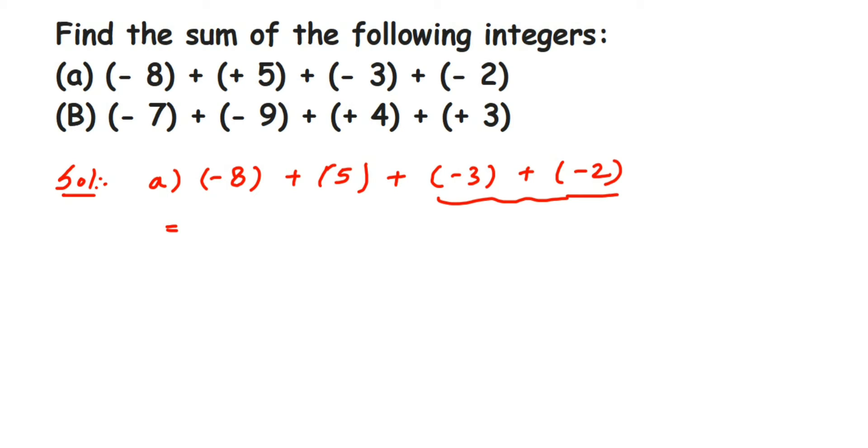So I'm going to solve (-3) + (-2) first. (-8) + 5 will remain the same, we're not going to solve them. For (-3) + (-2), we're adding numbers with the same sign, so we do addition. 3 + 2 is 5, and the sign here will be minus because both integers are negative.